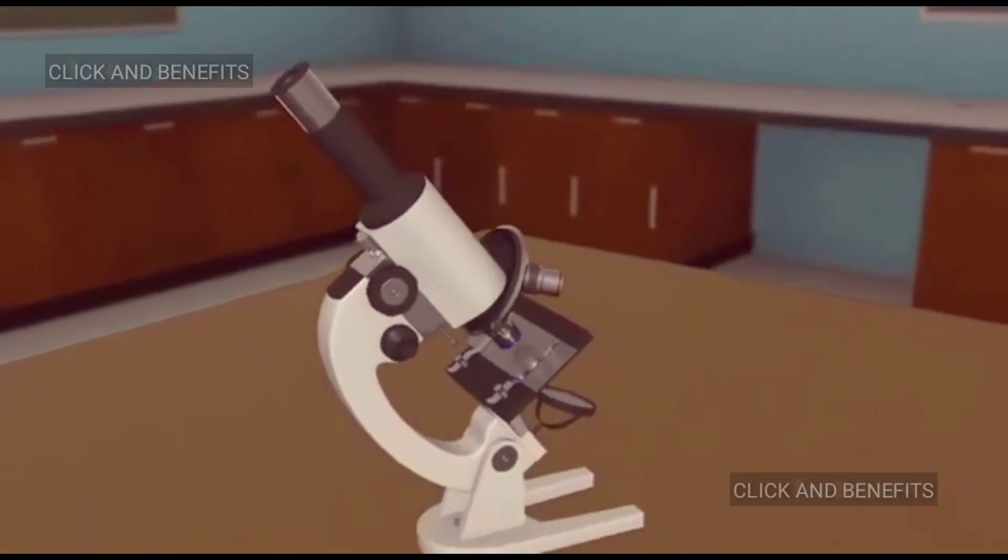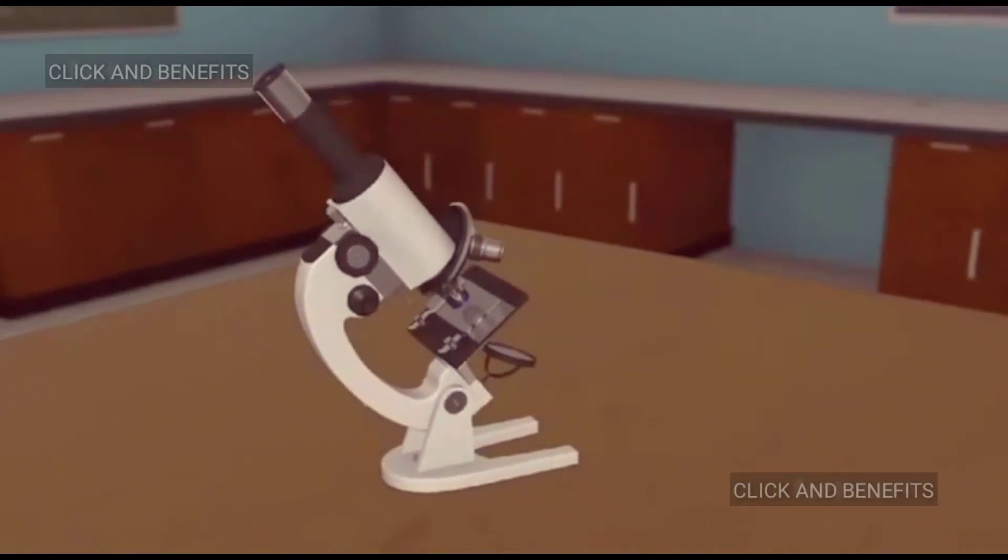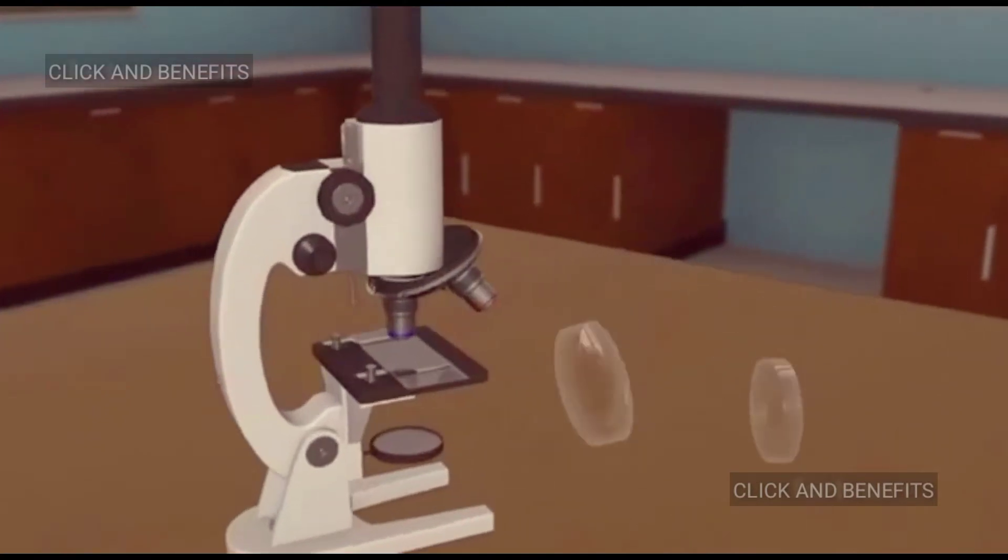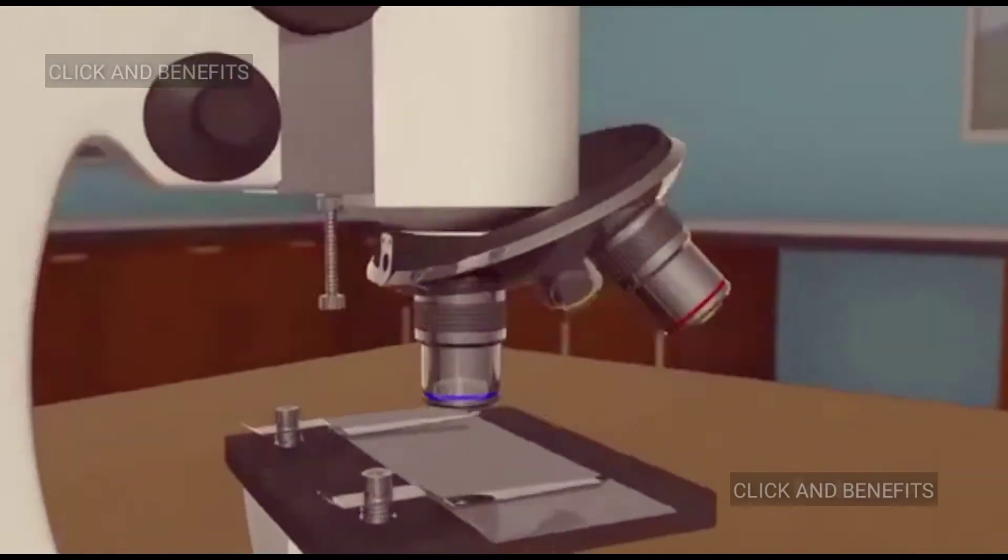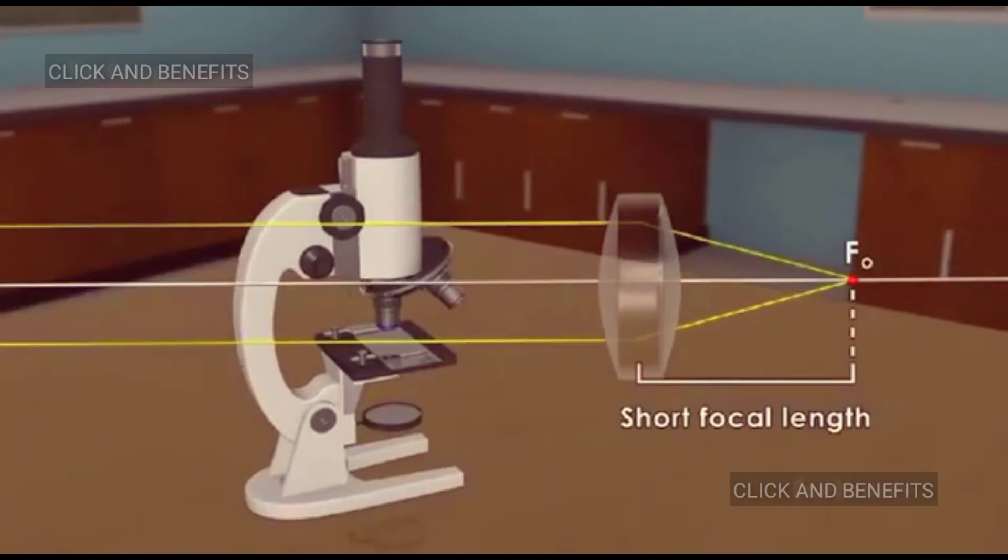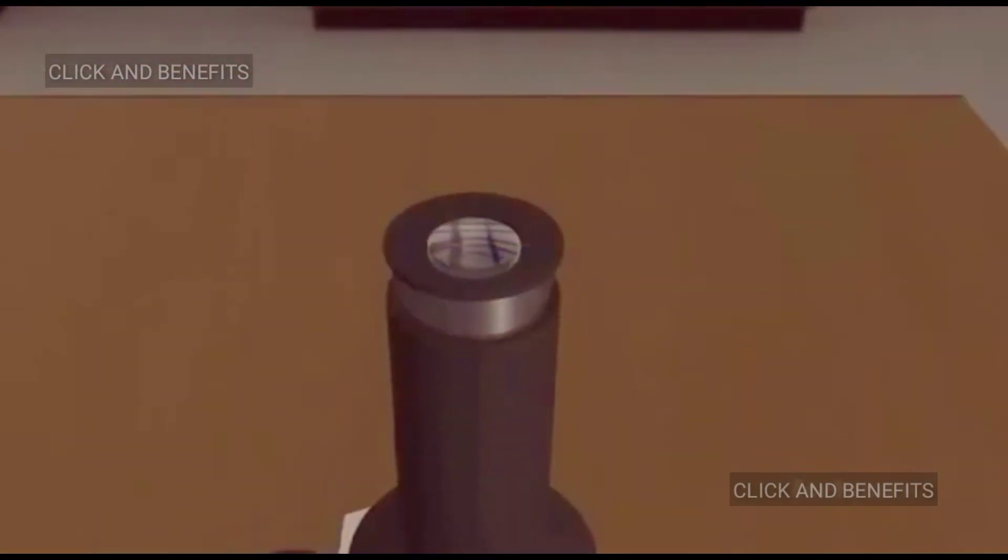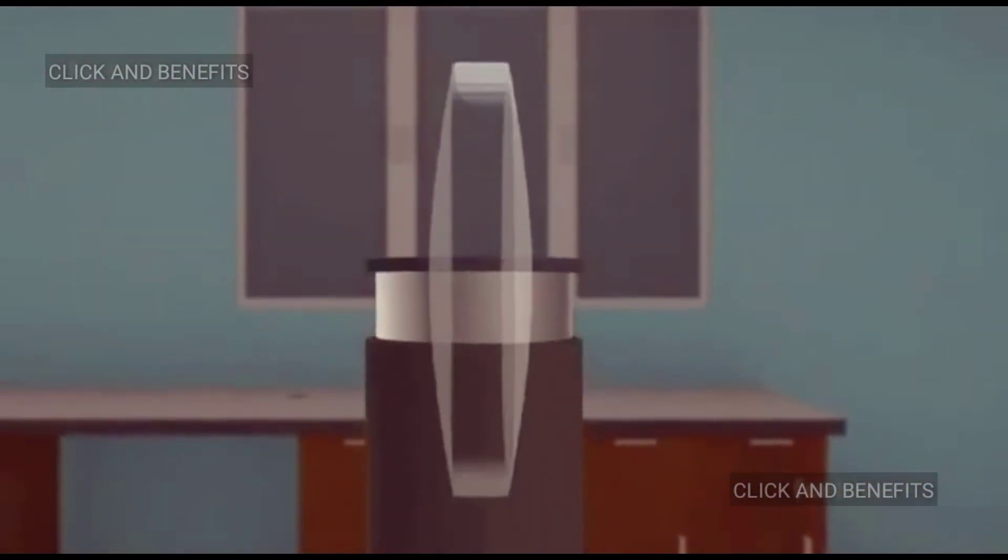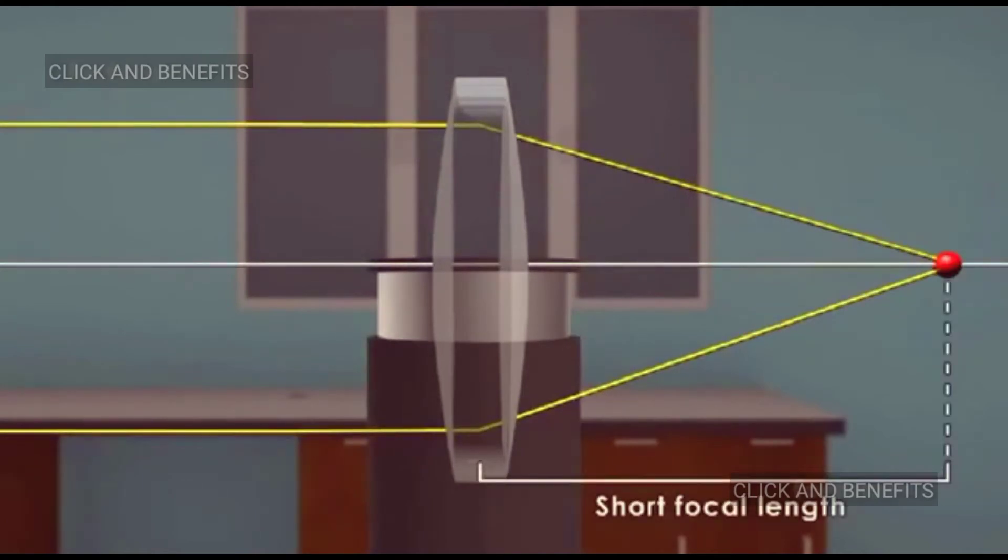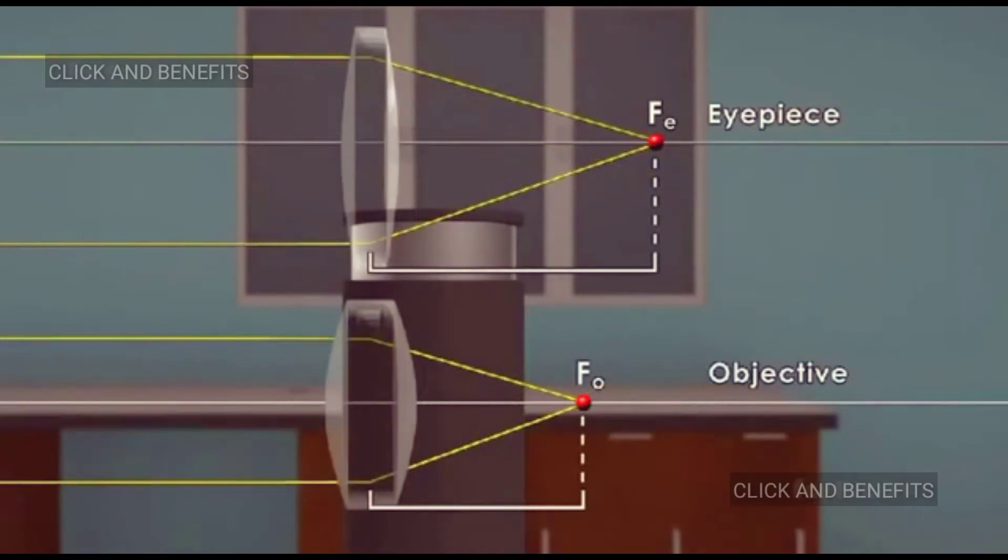The knobs for both coarse and fine adjustment allow the tubes to slide one into another, varying the distance between the two lenses. The lenses are convex with different focal lengths. The lens closer to the object is the objective and has a short focal length fo, usually below one centimeter. The lens nearer the eye is the eyepiece.